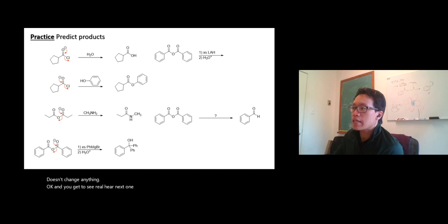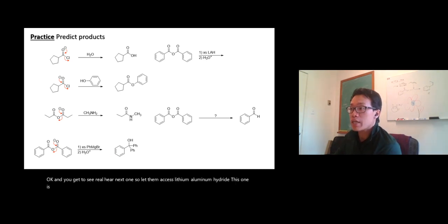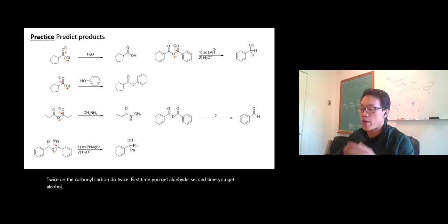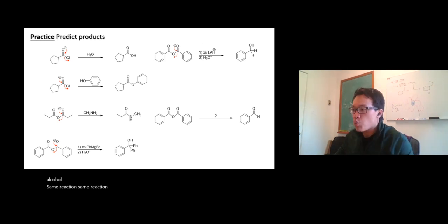Next one, so excess lithium aluminum hydride. This one is a strong reducing agent. Hydride will attack twice on the carbonyl carbon. Do it twice. First time you get aldehyde, second time you get alcohol. Same reaction, same reaction mechanism.